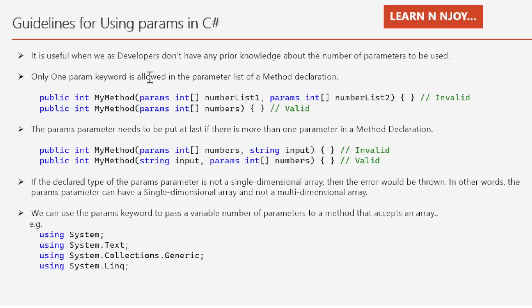Guideline two: only one params keyword is allowed in the parameter list of a method declaration. In the example, the first statement has two params parameters — that is invalid. The second statement is valid because only one params parameter is used in the method. That's why the first is marked invalid and the second is marked valid.